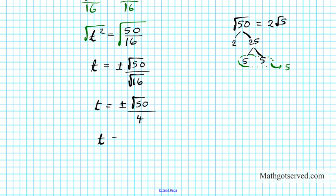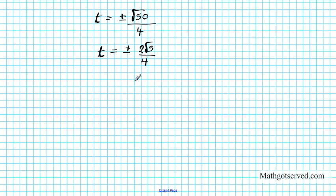So t becomes plus or minus 2 root 5 over 4. We can reduce further by dividing the top and bottom by 2. I'm going to have t equals plus or minus root 5 over 2. Well, you're calculating time here. And we know time has only one direction, which is in the positive direction. Time never travels backwards.